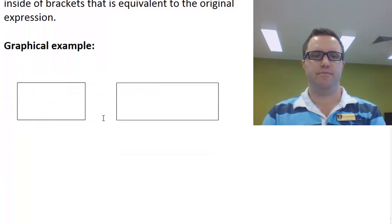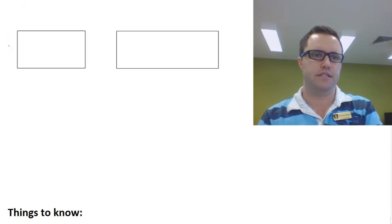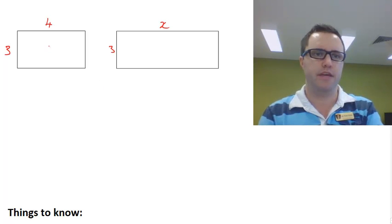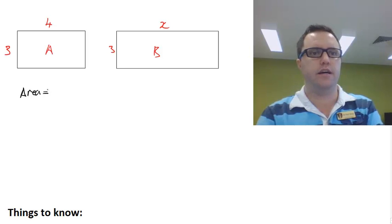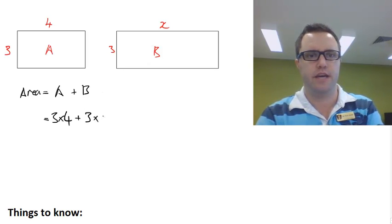I'm going to have a look at a graphical example. If we make this side length 3, this one 4, and this one x, remember that there are a couple of ways we can describe the area of both these shapes A and B. We can describe the area as equal to the area of A plus the area of B, so the area of A is 3 times 4 plus the area of B which is 3 times x.